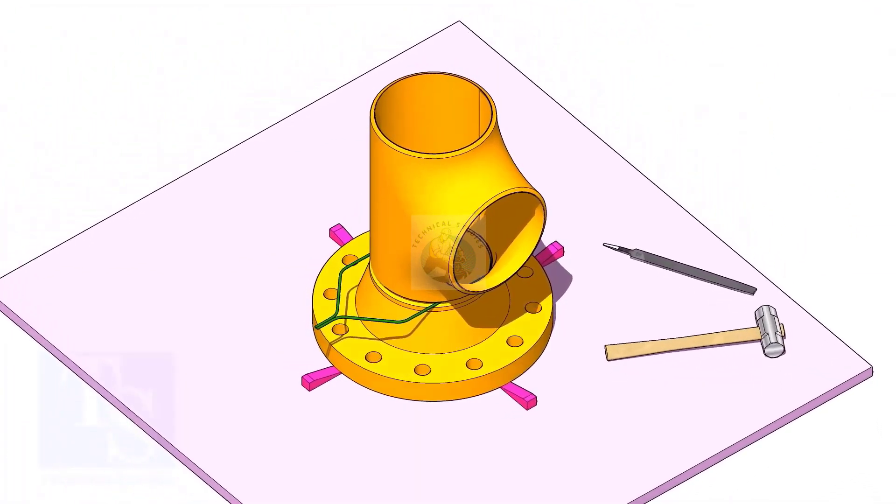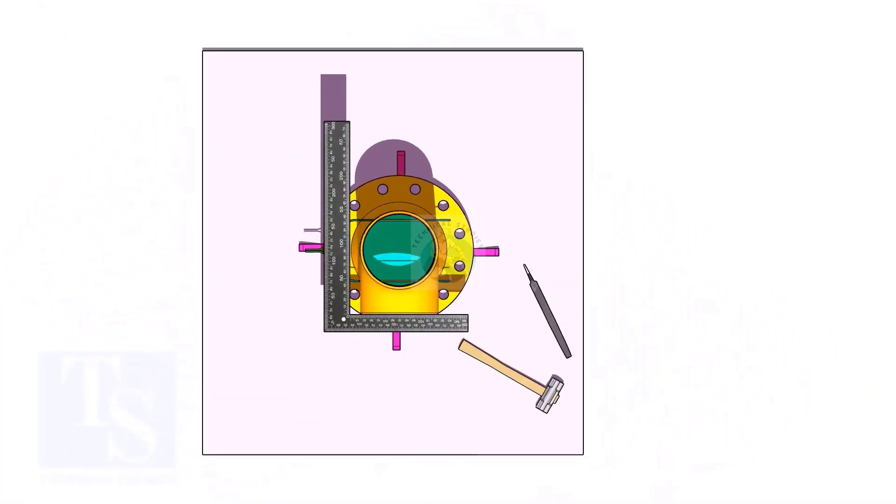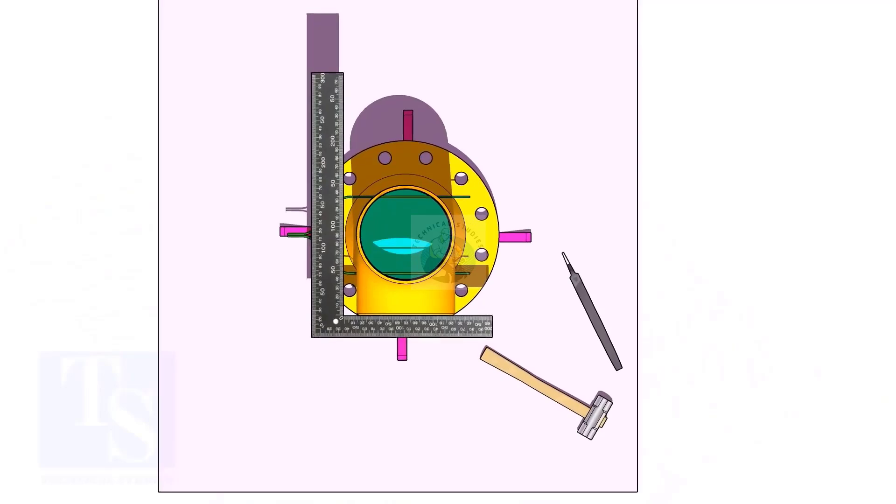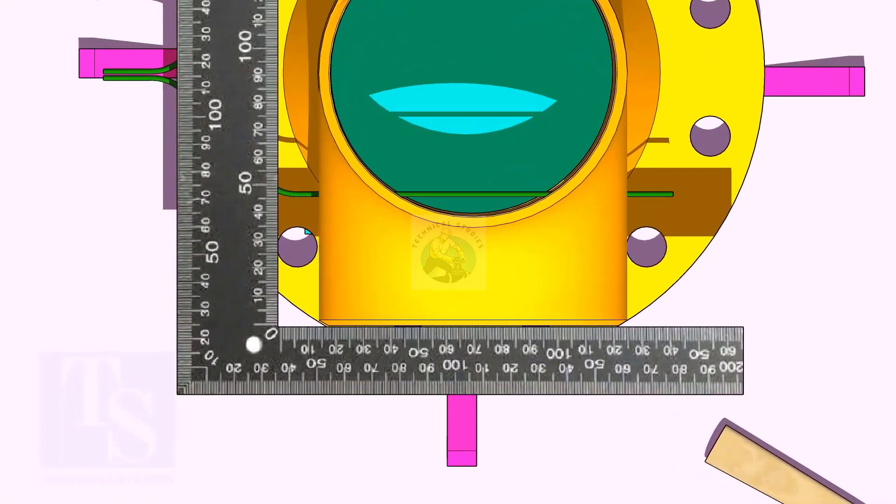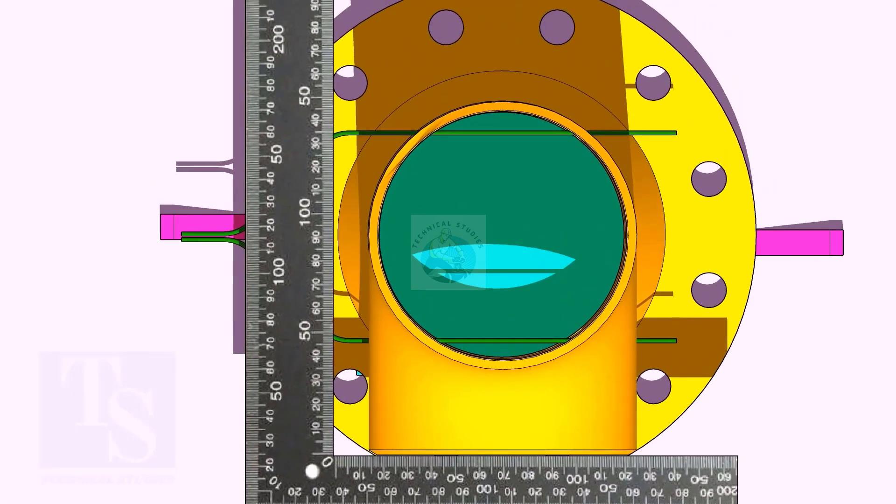Put the tee on the flange. Match the hole center of the flange and the tee face as shown. Correct the overlap.